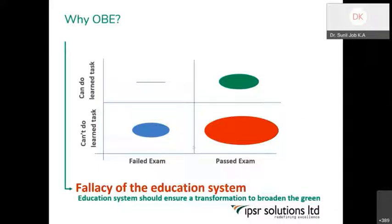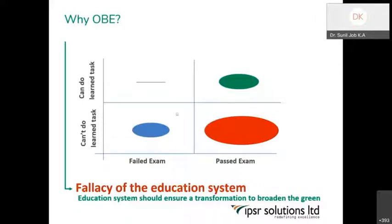What we could find is that outcome-based education addresses this — there is a very small portion of students who are able to perform tasks related to their area of study. The major focus of outcome-based education is to transform both the blue area and the red area into the green quadrant. Outcome-based education is focusing not only on what the students are capable of knowing, but what the students should be capable of doing. The output — what they are able to do — is something highlighted in outcome-based education.